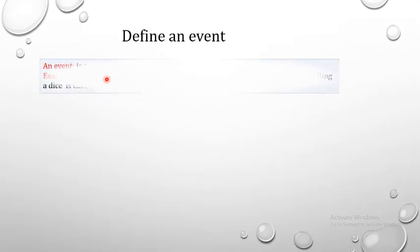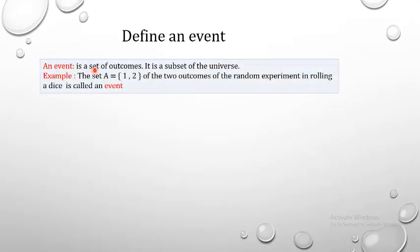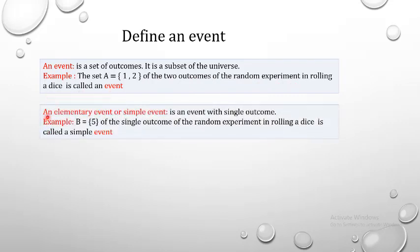An event is a set of outcomes — it is a subset of the universe. For example, the set A = {1, 2} of two outcomes from rolling a die is called an event. An elementary event or simple event is an event with a single outcome. For example, B = {5}, a single outcome from rolling a die, is called a simple event.